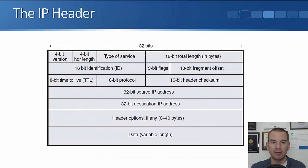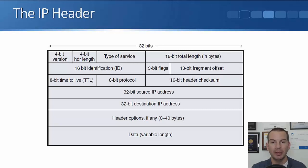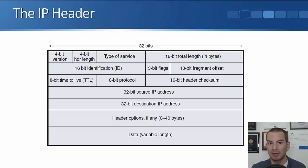Now let's look at the IP header. The first part is a 4-bit version field — either IP version 4 or IP version 6. Next is the 4-bit header length, which can vary because the header options further down are variable length. Then we have the type of service byte, used for quality of service information. We can mark a packet to specify what kind of traffic it is, and routers can act on that marking to give it better service — for example, for voice over IP traffic. Then we have the 16-bit total length of the packet.